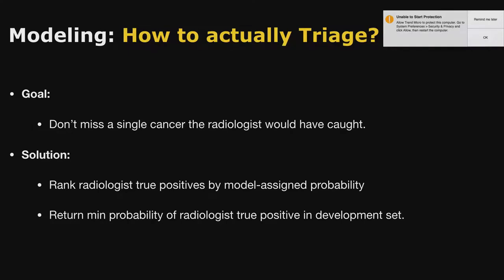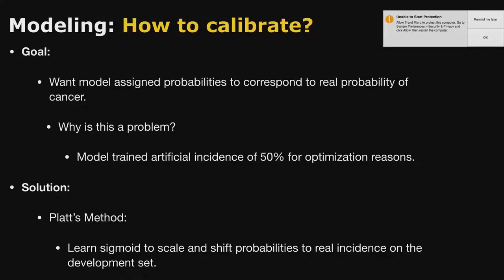For triage, our goal is to mark as many people as healthy without missing a single cancer the radiologist would have caught. Intuitively, you take all cancers the radiologist caught, find the minimum probability of cancer across those images, and call that the threshold - and that's exactly what we do. Another relevant detail: if you want the model to output a reasonable probability and you train on 50-50 sampled batches, by default your model thinks average incidence is 50%, which is crazy confidence. To calibrate, we use Platt's method - fitting a two-parameter sigmoid with a scale and shift on the development set to make the average probability actually fit the real incidence distribution.